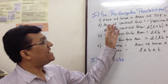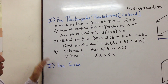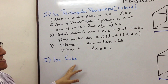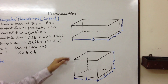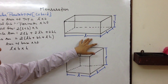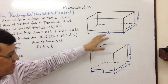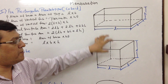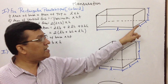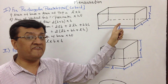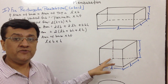Having covered all formulas for a rectangular parallelepiped, we now move to the cube. Looking at the diagram, you can find the difference: in a rectangular parallelepiped, all three dimensions — length, breadth, and height — were different. In a cube, every single dimension is the same, so I've written length, length, and length. That's the first difference.